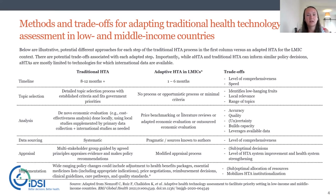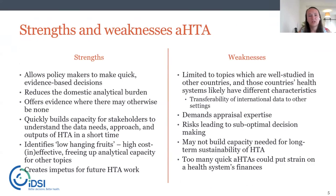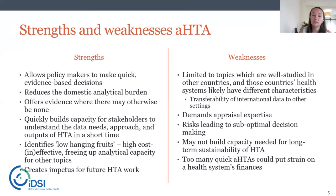We're trading off speed, the level of comprehensiveness, local relevance, accuracy, and quality. Those trade-offs come with strengths and weaknesses for the adaptive HTA approach. We think it allows policymakers to make quicker decisions, may reduce the domestic analytical burden, can offer evidence where there may otherwise be none, and can quickly build capacity for stakeholders to understand the uses and levers for HTA. It can also identify low-hanging fruits — highly cost-effective or highly cost-ineffective interventions — saving analytical capacity for locally-specific questions.